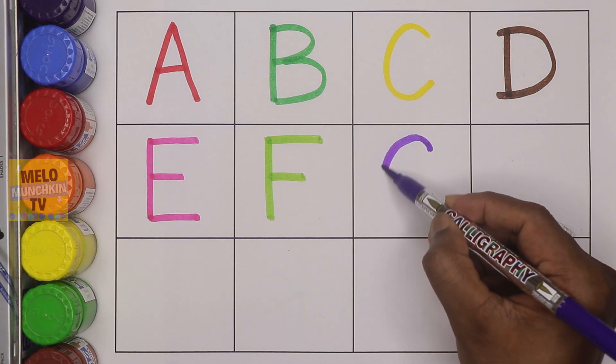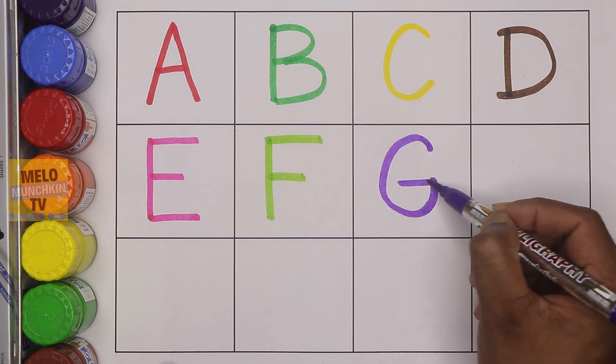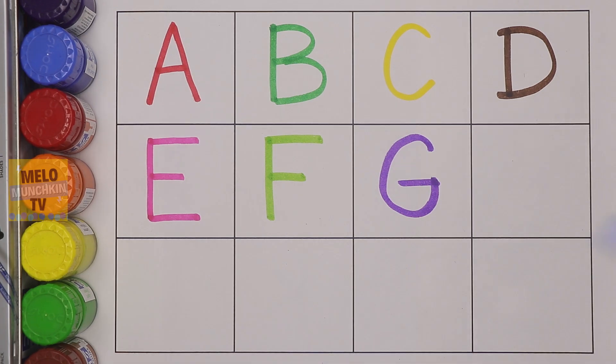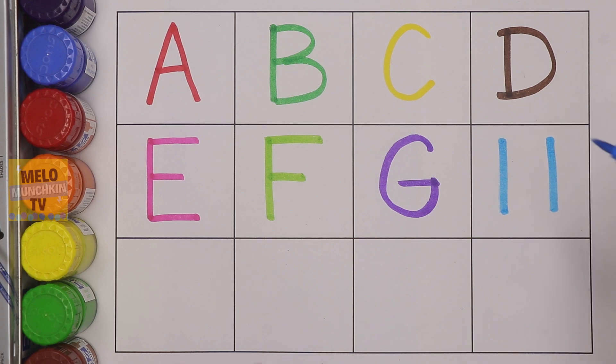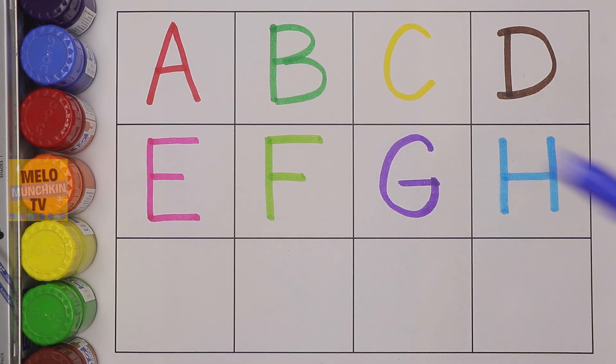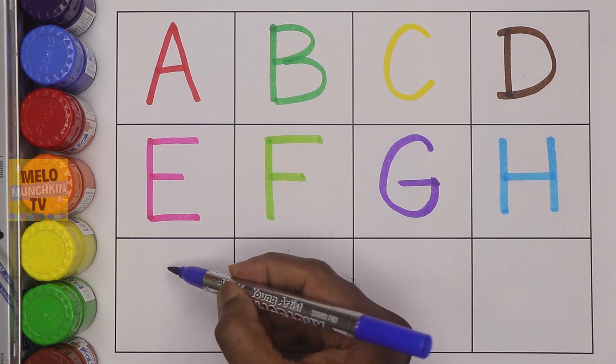G. G for gate, G for gate. Blue color, H. H for house, H for house. Dark blue color, I.